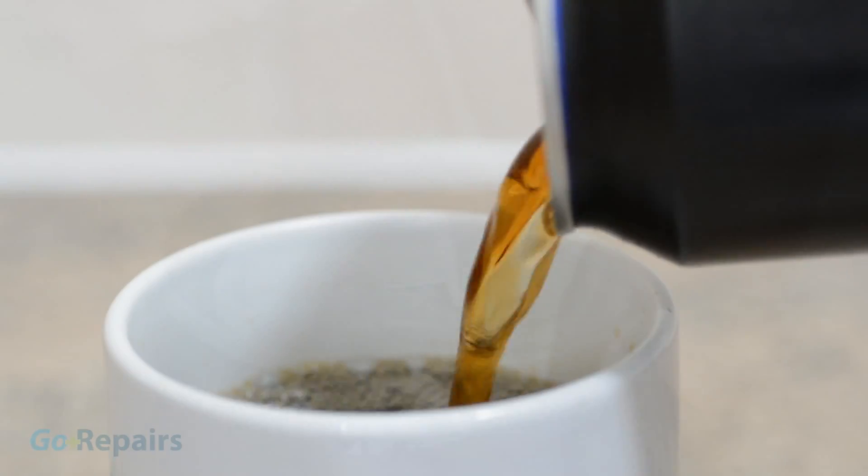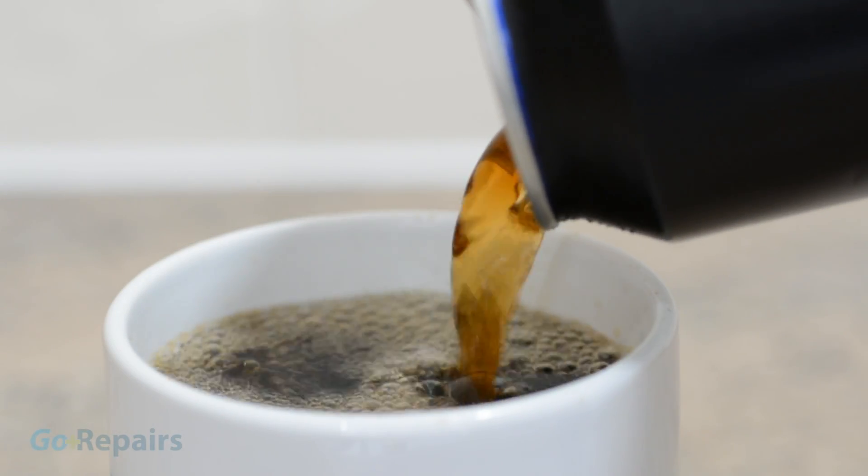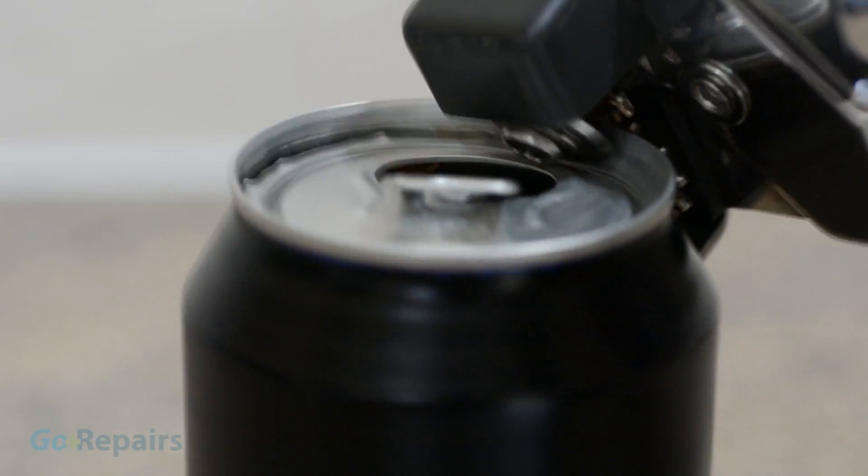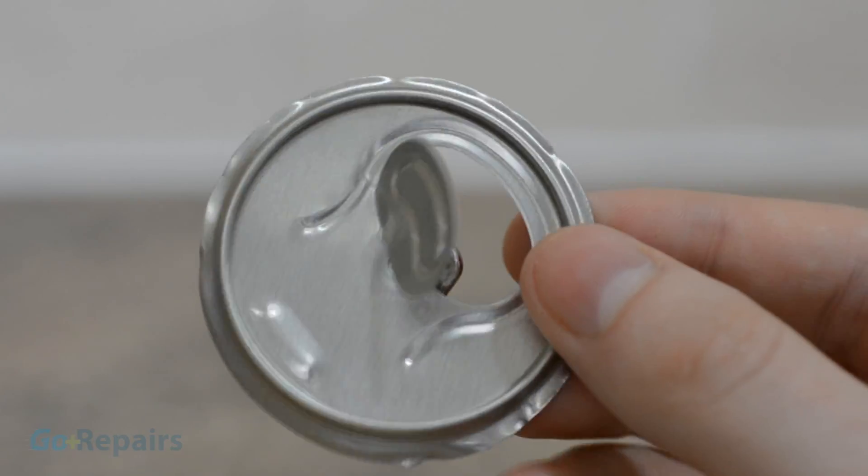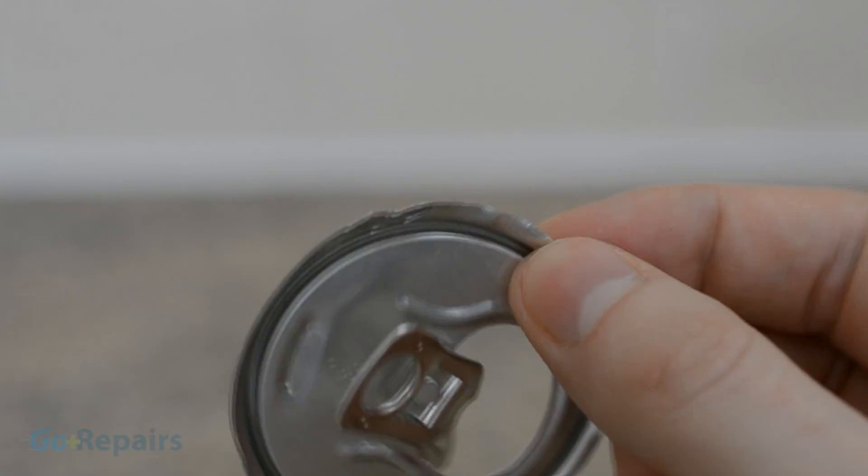First off, we need to empty the can, so pour the contents into a cup and put to one side as we'll be using that later. Using a can opener, cut off the top. Don't throw it away as I'll be showing you a use for it in another video.